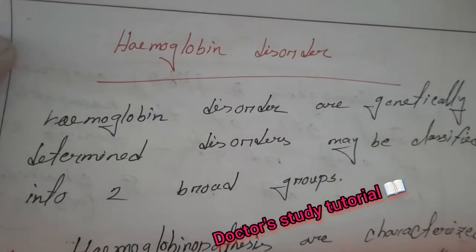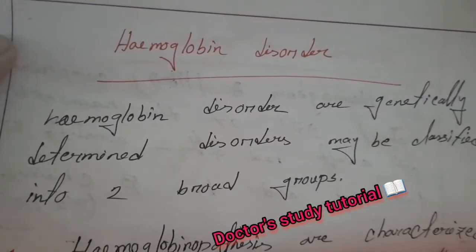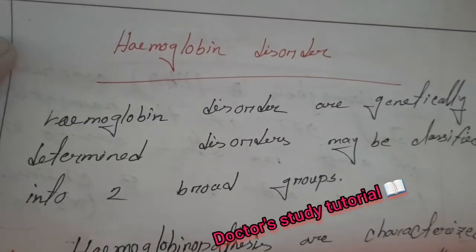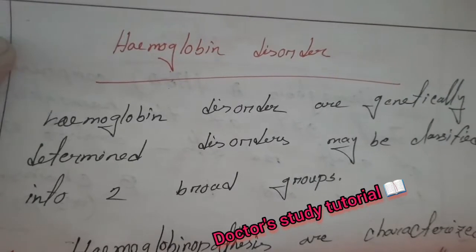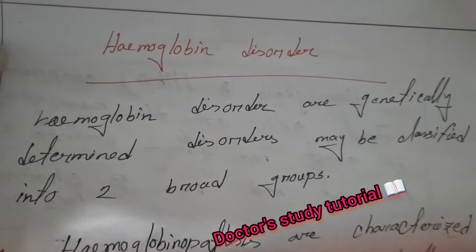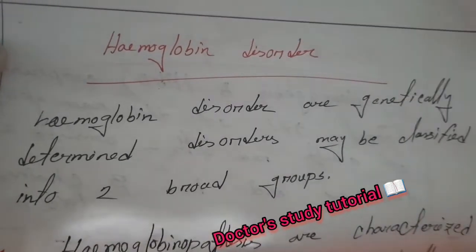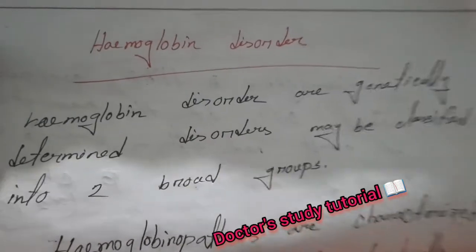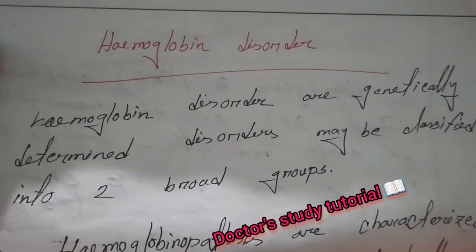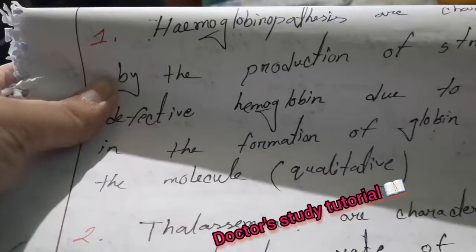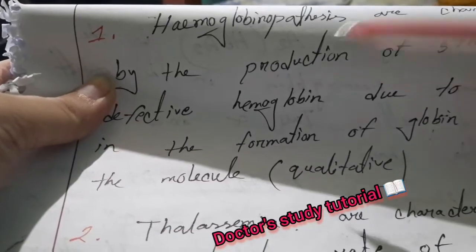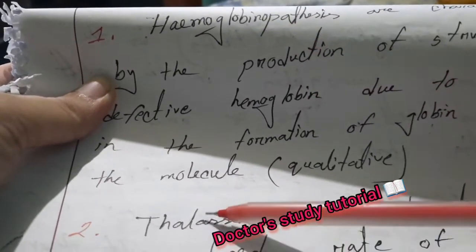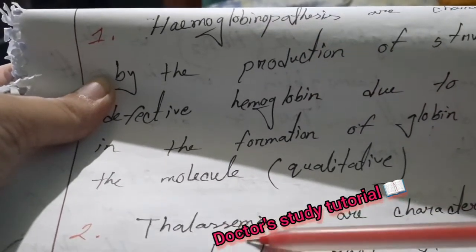Today's topic is hemoglobin disorders. Hemoglobin disorders are genetically determined disorders and may be classified into two broad groups: hemoglobinopathies and thalassemia.